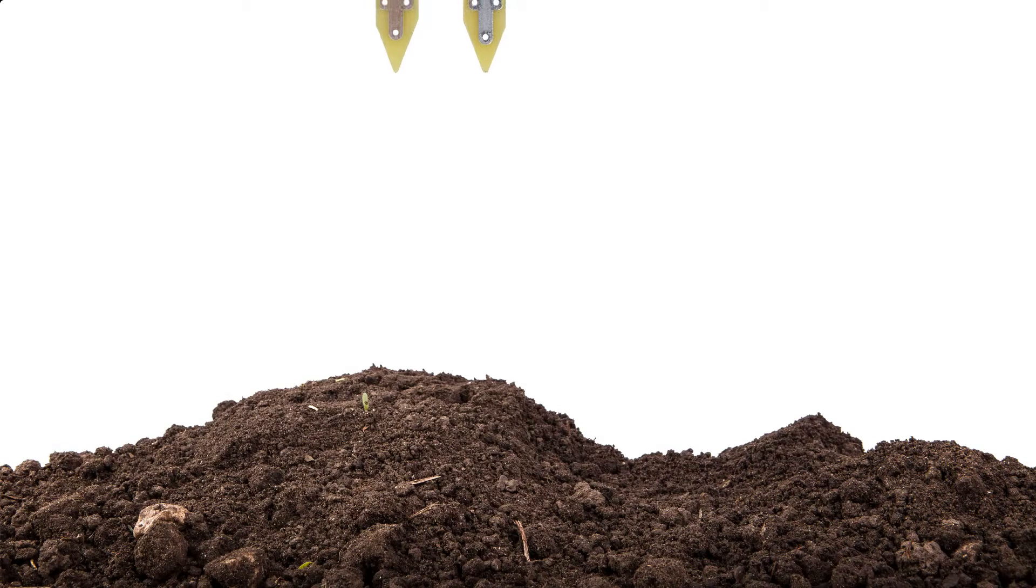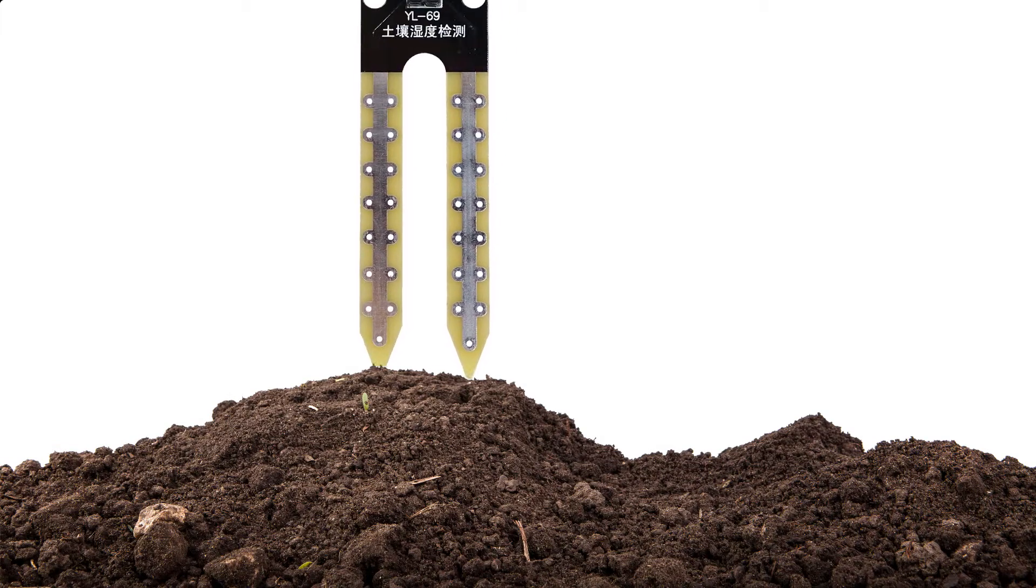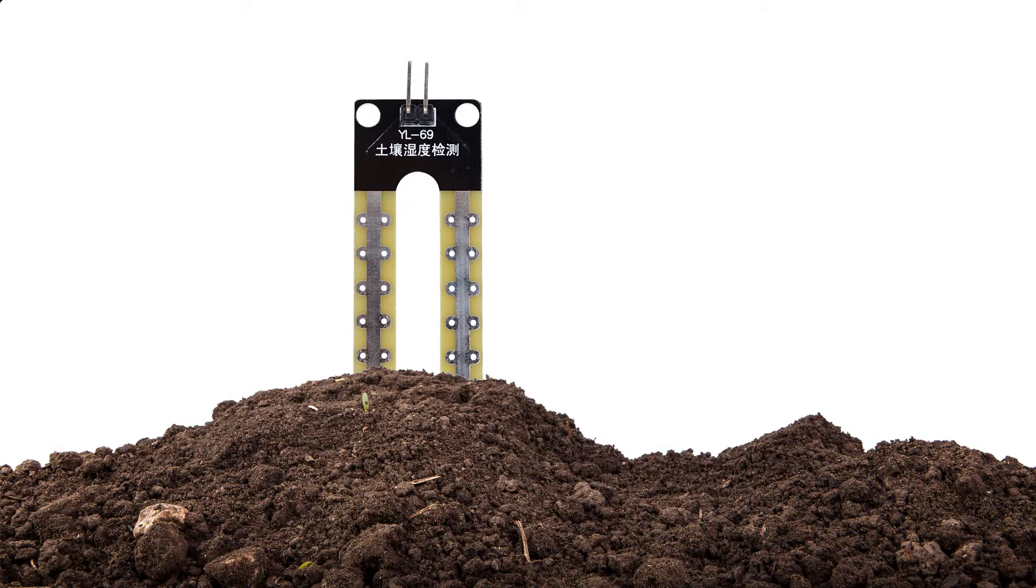Water is a very good conductor. So when a soil moisture sensor is placed in a substance that contains water, its ability to conduct electricity increases and its resistance level decreases.